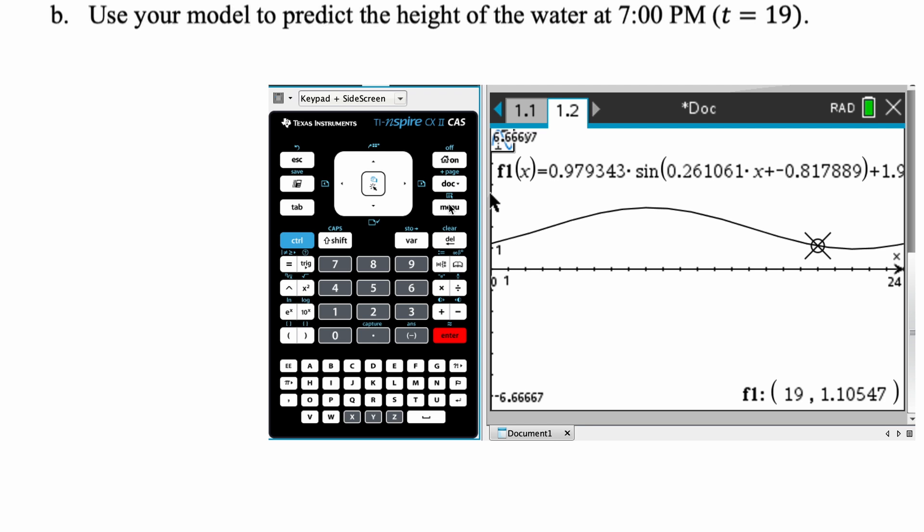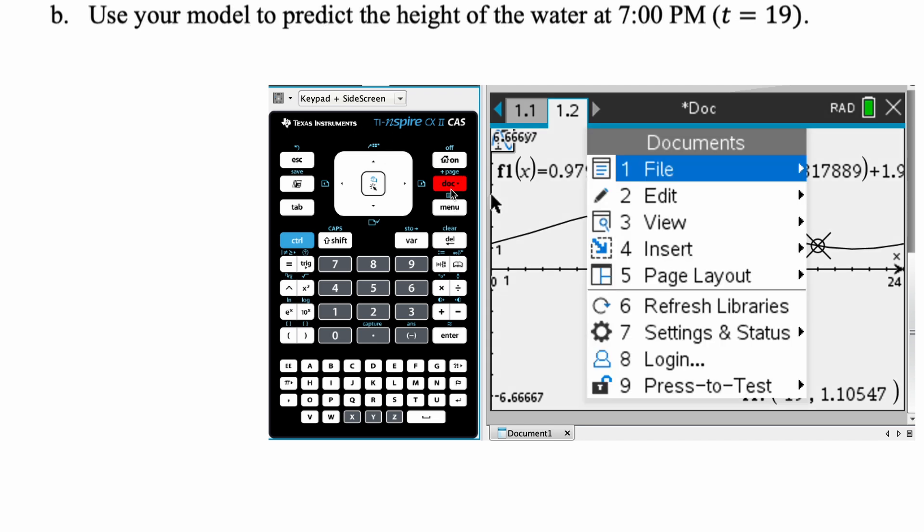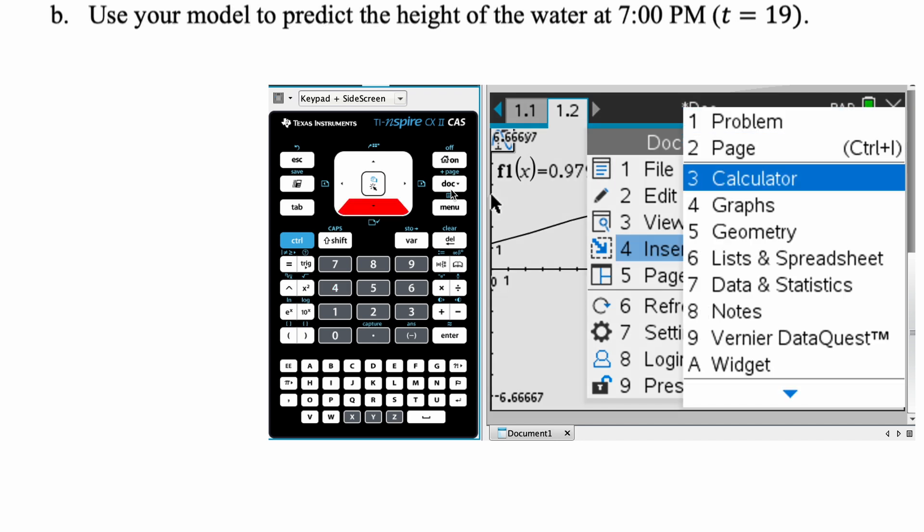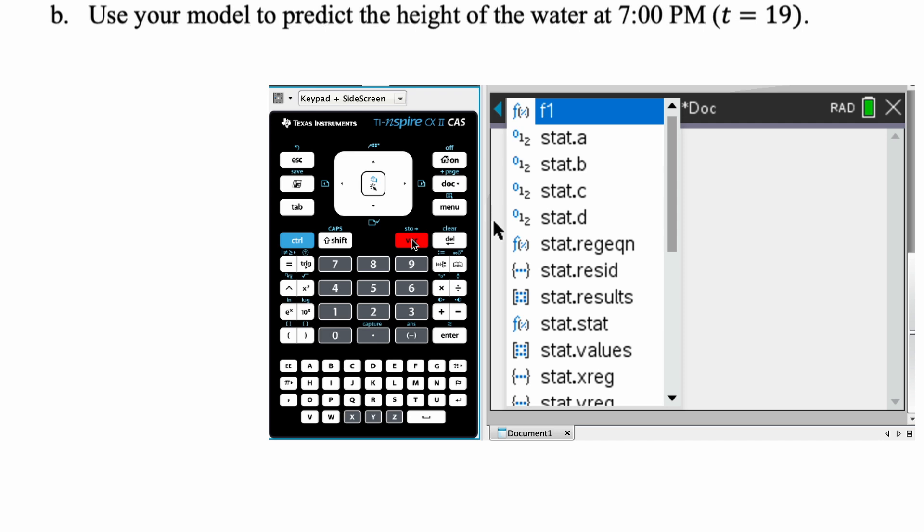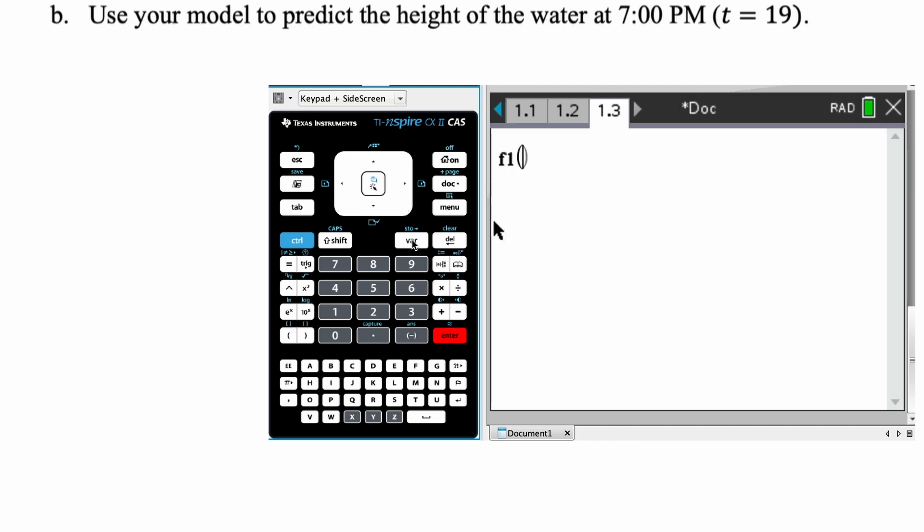But also, another option is we could have inserted, so doc for a calculator page. Now, when I press var, you're going to see a lot of variables. I just need F1. So regressions create a lot of variables, and most of them we will never look at. But I need F1, and I can just type in 19 here if I want as well. Either approach is totally fine. Let's handwrite this in, and then let's look at the next part.